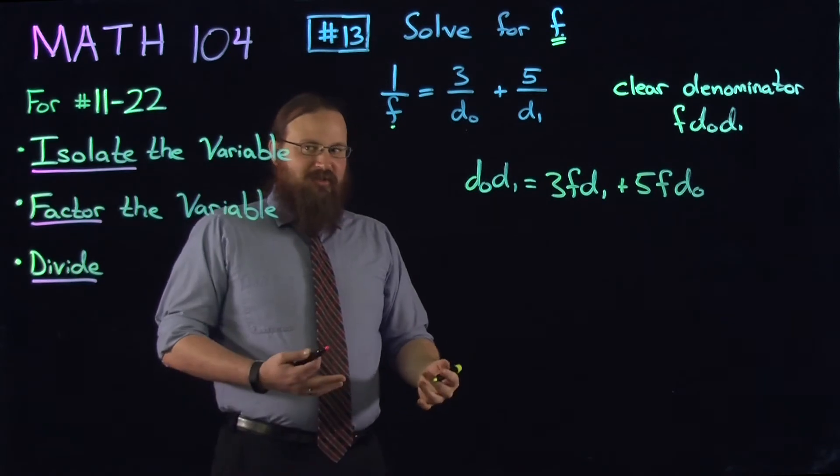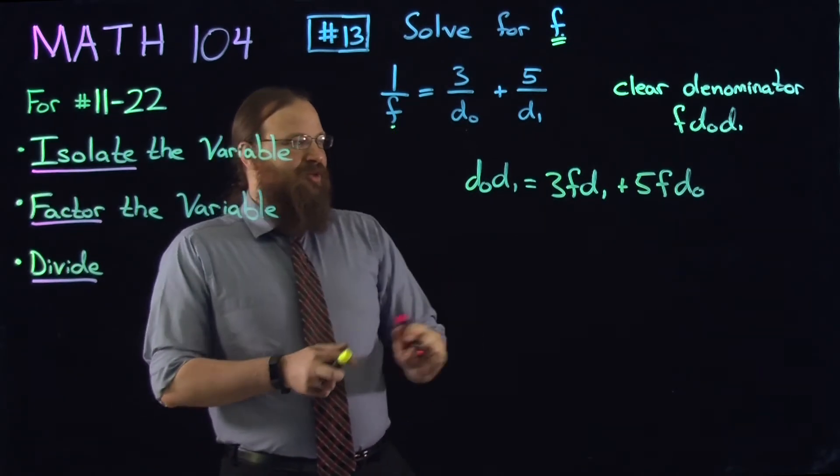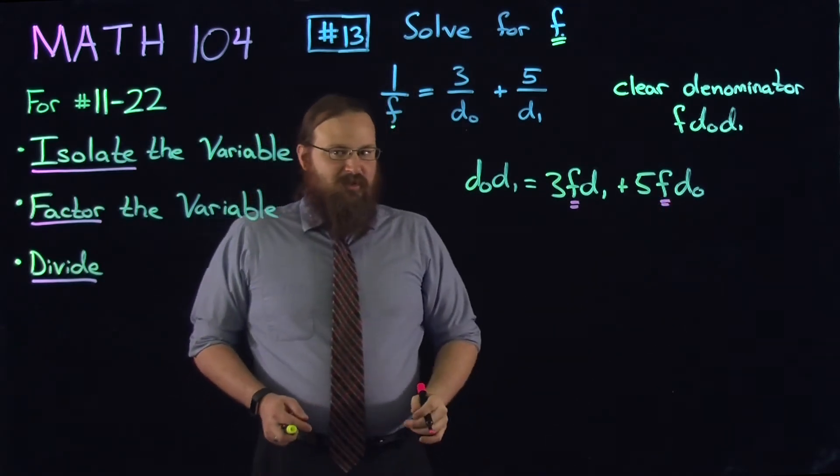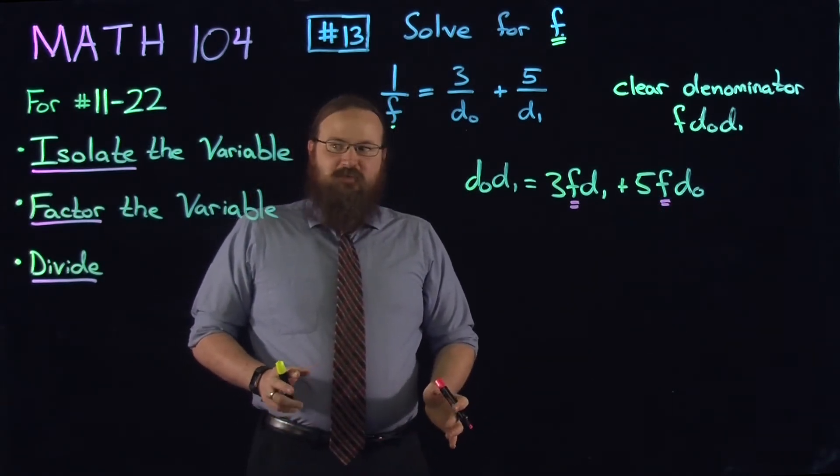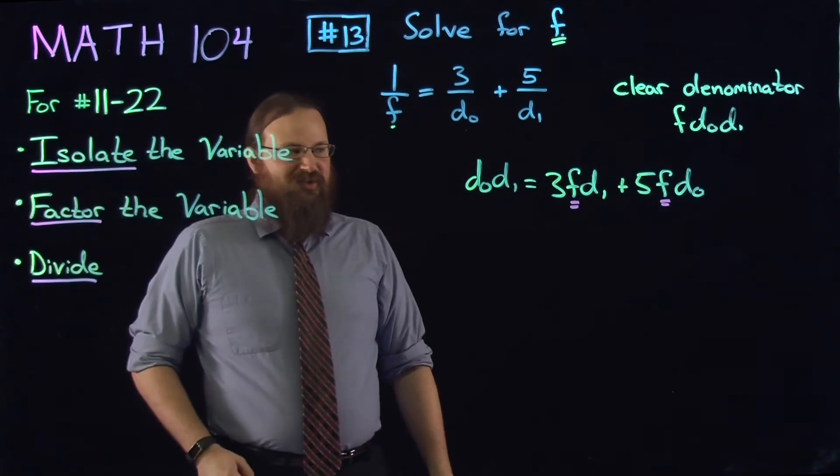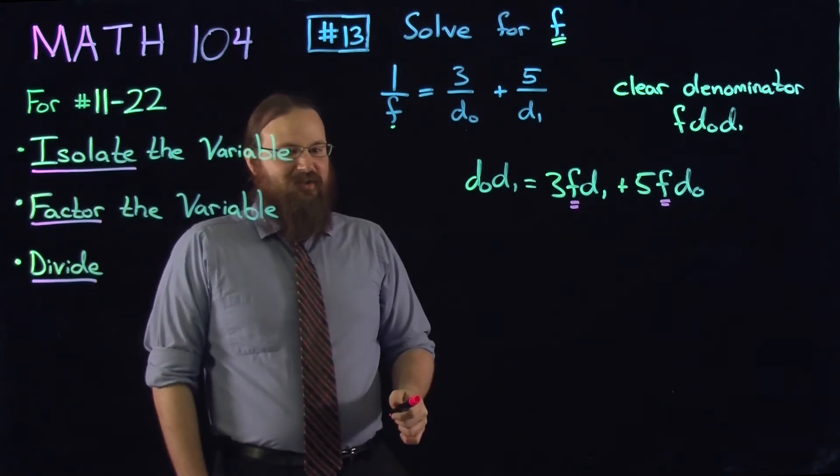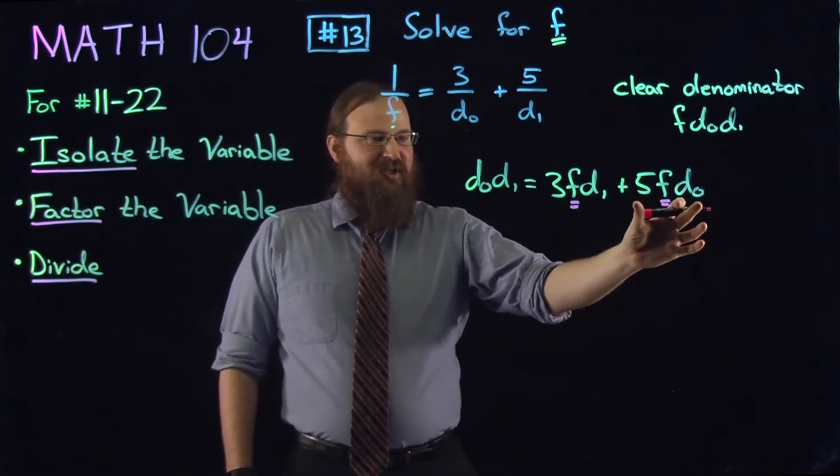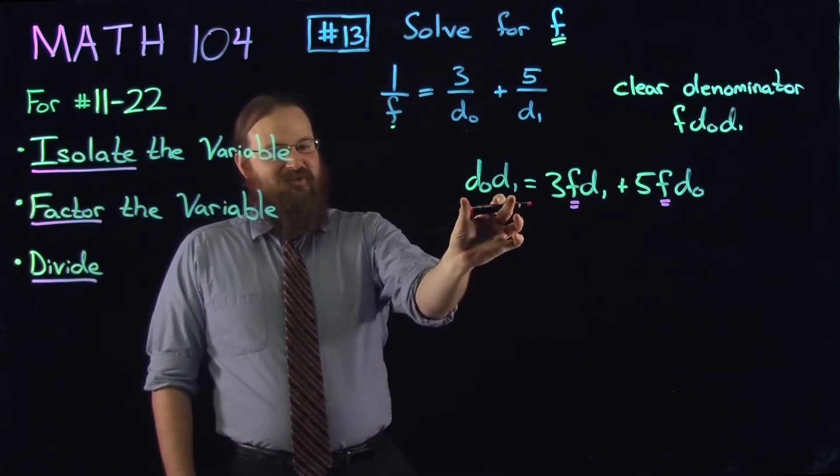So what we've done is we've cleared the denominator, and we still see the variable that we're searching for, f. We're essentially done, because what we wanted to do was isolate the variable on one side. It is isolated on the right-hand side. Everything that's a term that has an f is on the right-hand side. Everything that doesn't have an f is on the left-hand side.